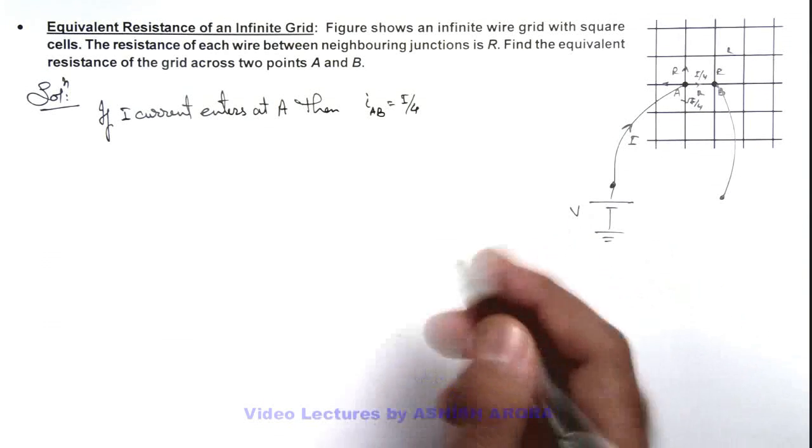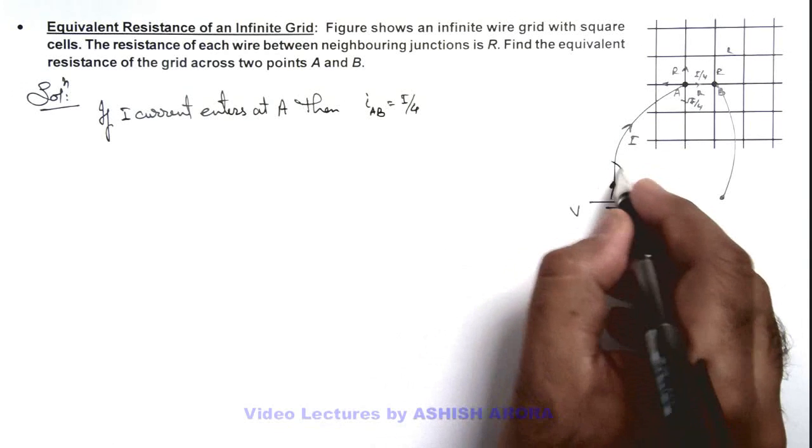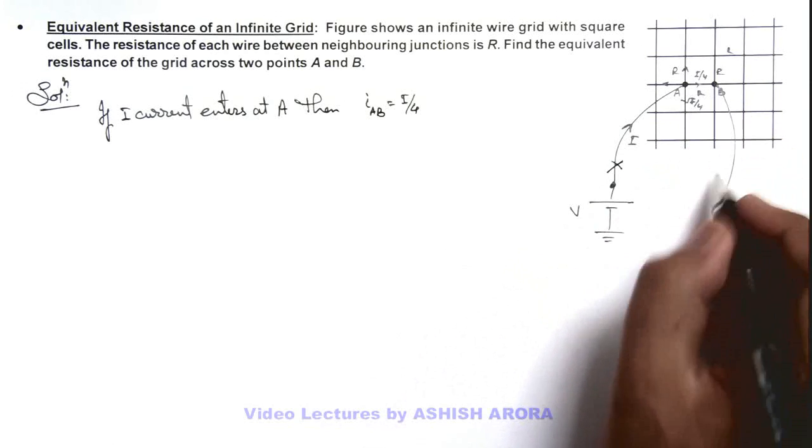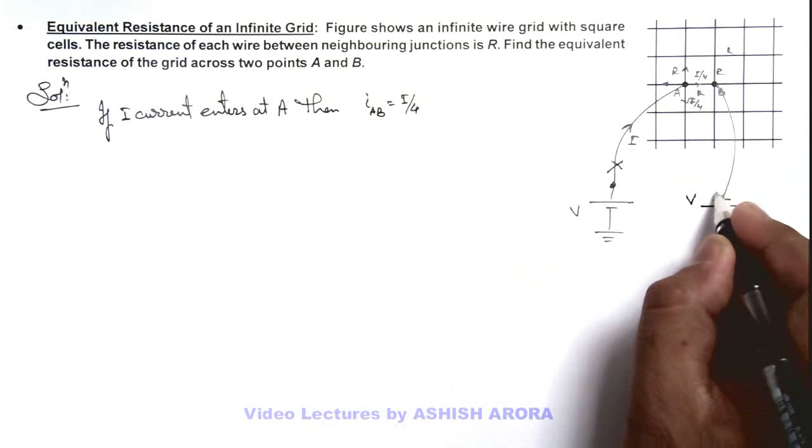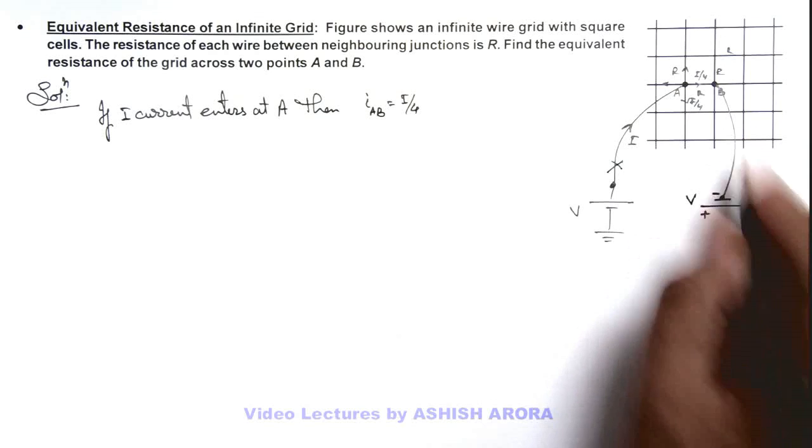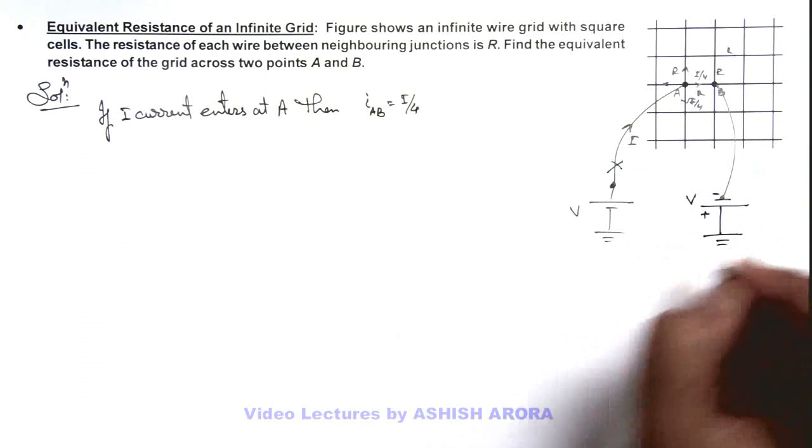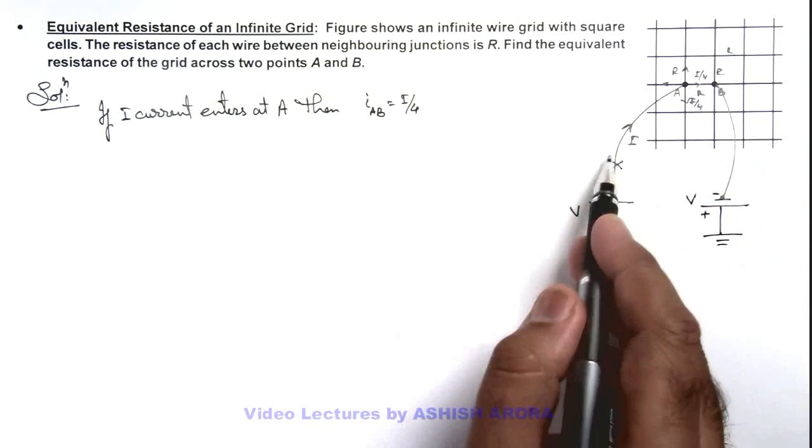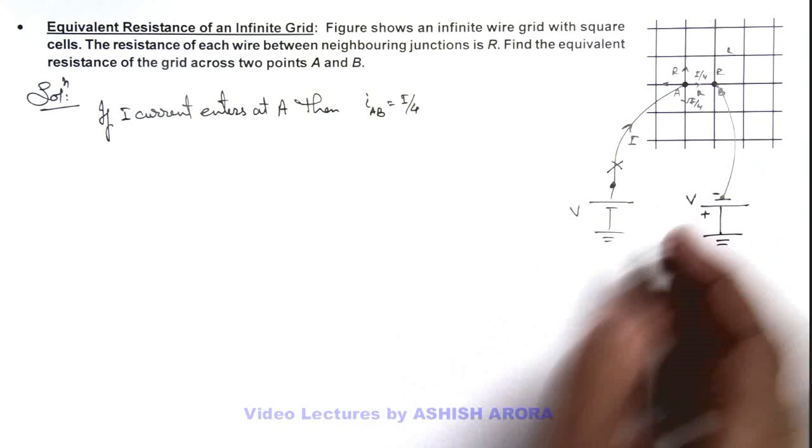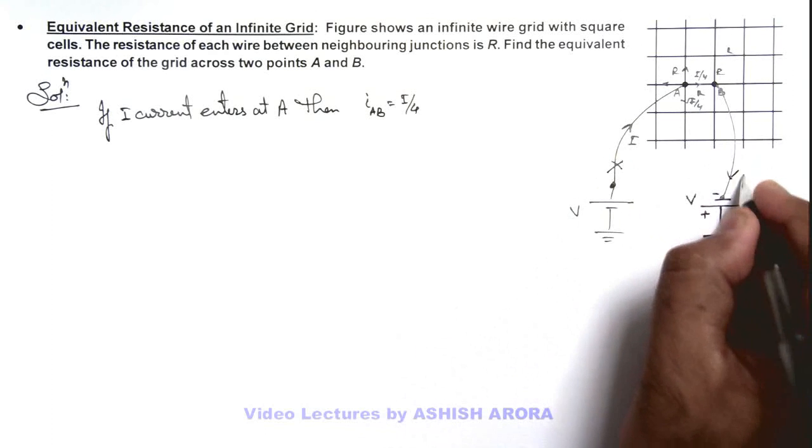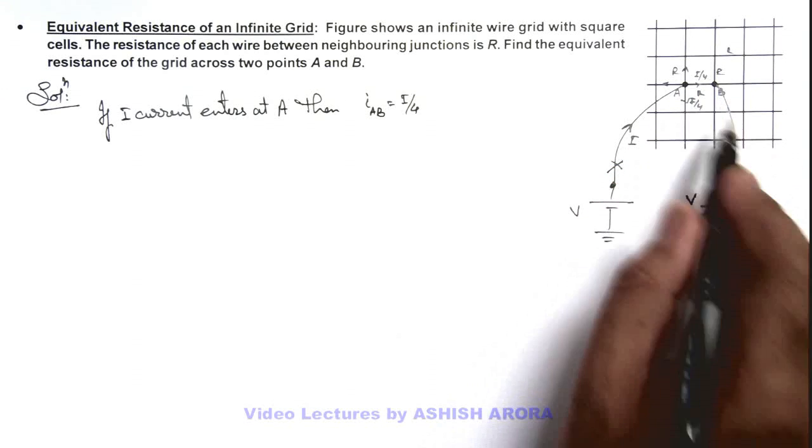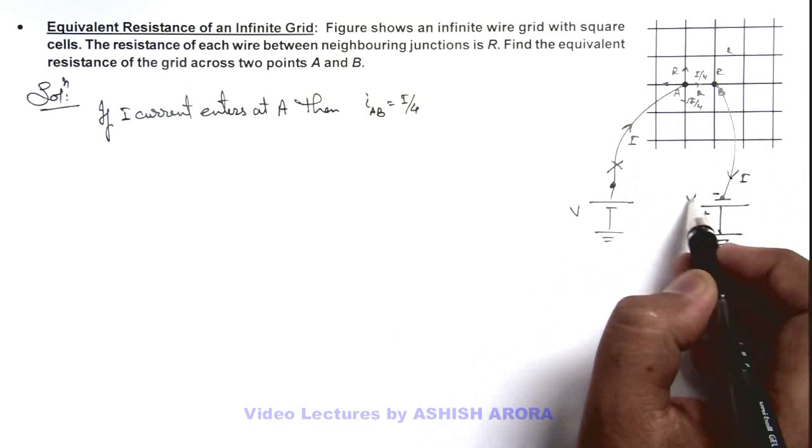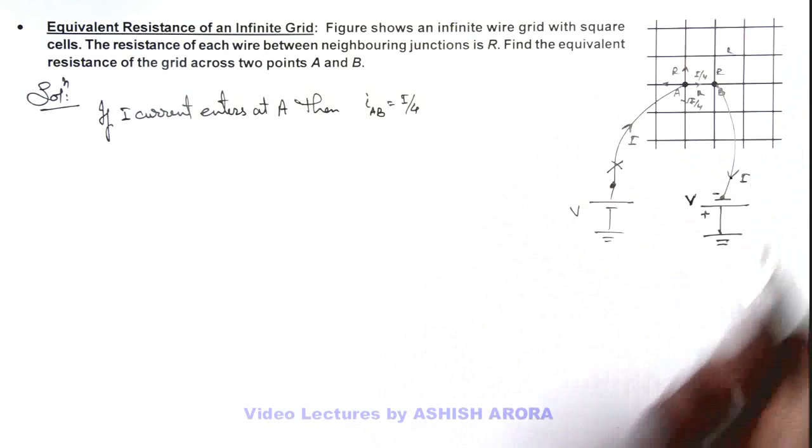And if in another case we keep this A open and we connect this battery B with the battery in opposite polarity, with low potential terminal at B and high potential is grounded, and we keep A open, then here you can see again the same amount of current I which was flowing and getting into A will be withdrawn from point B through the battery, because battery is same and the grid is also symmetric.